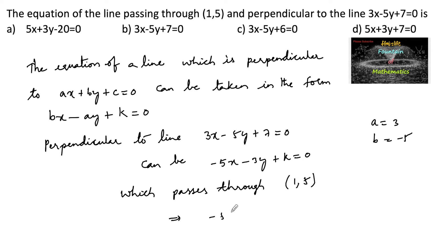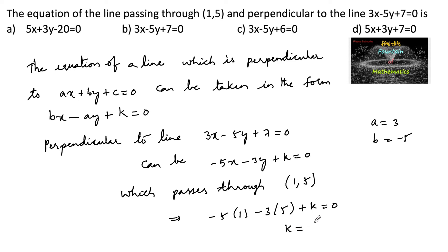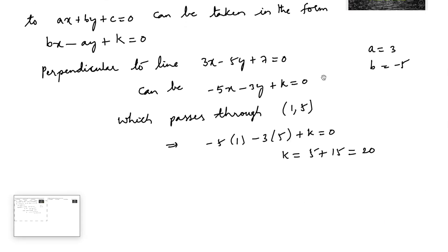Substituting the point (1, 5): -5(1) - 3(5) + k = 0, which gives k = 5 + 15 = 20.